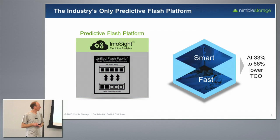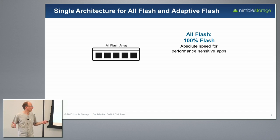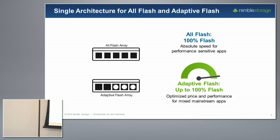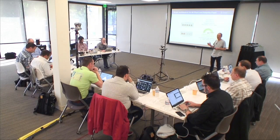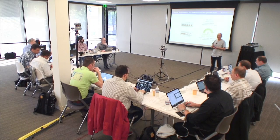So, the unified flash fabric — what is it? We have a brand new all-flash array, 100% flash, whose design center is absolute performance and very low latency. We also have our existing hybrid platform that we call the adaptive flash platform. This platform is variable in that we can vary all the resources dynamically to provide a sweet spot of price, performance, and capacity in a completely flexible way that suits many applications.